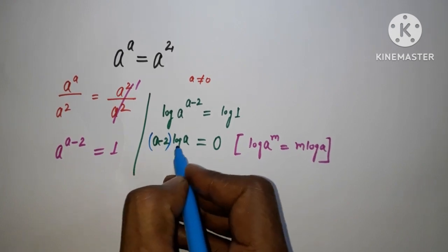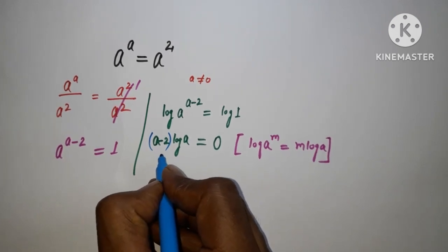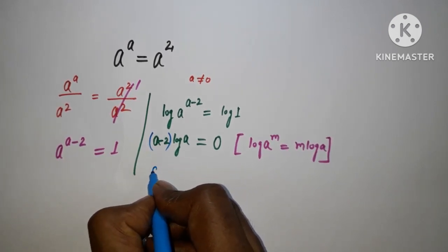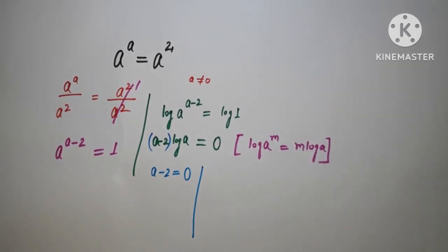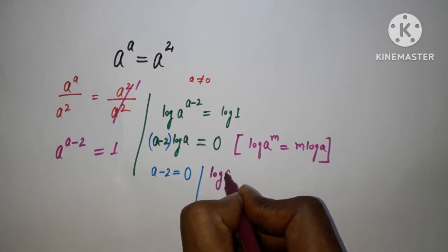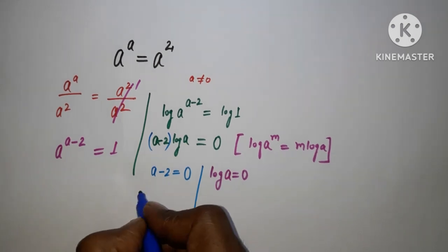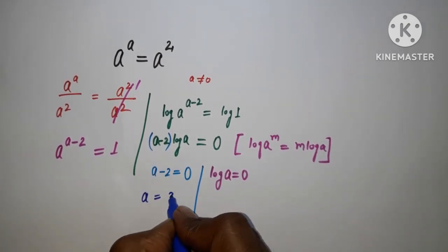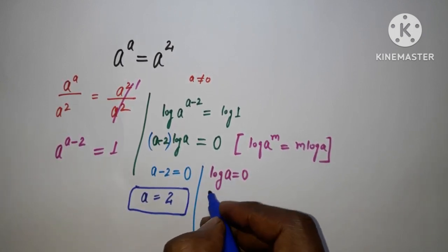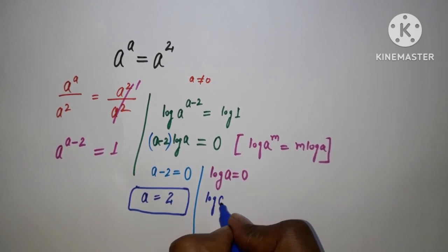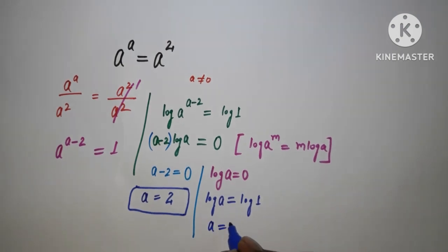We have two terms in a product equal to 0. Either a minus 2 equals 0 or log a equals 0. If a minus 2 equals 0, then a equals 2. If log a equals 0, then a equals 1, since log 1 equals 0.